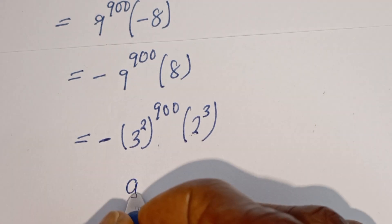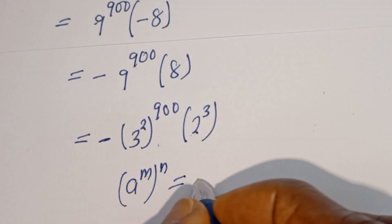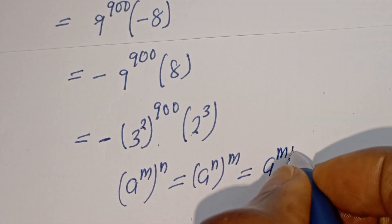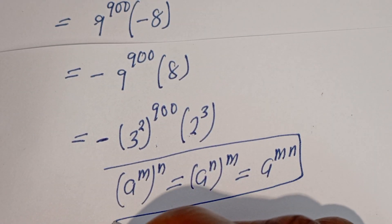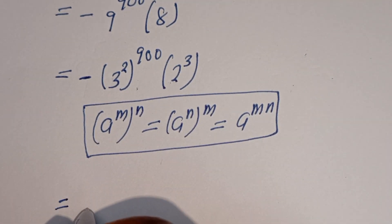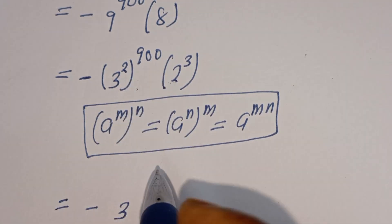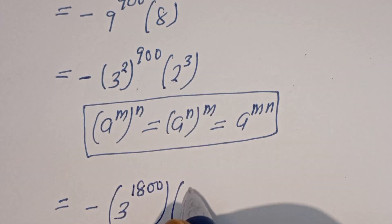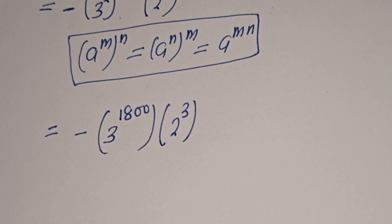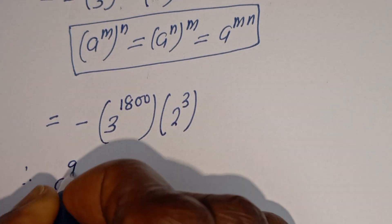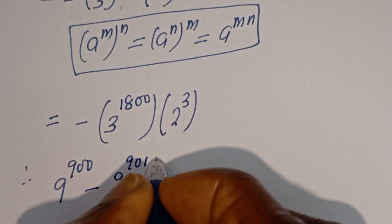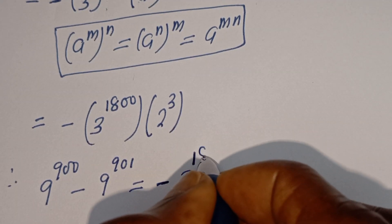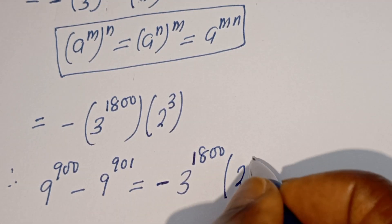Take note of this: if you have a to the power of m to the power of n, this is equal to a to the power of m times n. Then this can be written as minus 3 to the power of 1800 multiplied by 2 to the power of 3. This is the answer.